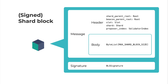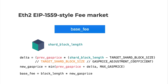The gas price in the shard is much lower than ETH1. We plan to introduce an EIP-1559 style approach for the fee market. The gas price adjustment formula is similar to the EIP — if the shard block size is larger, the gas price will increase more, and vice versa.